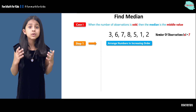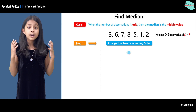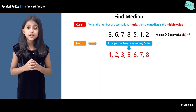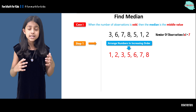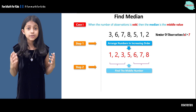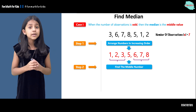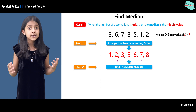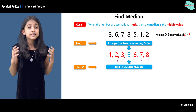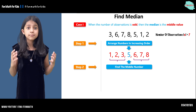In step one, you will arrange the numbers in increasing order. If you arrange them in increasing order, you will get this sequence: one, two, three, five, six, seven, and eight. Step two is to find the middle number. So what is the middle number in the sequence? It is five. In this sequence there are seven numbers, so it's easy to find the middle number.